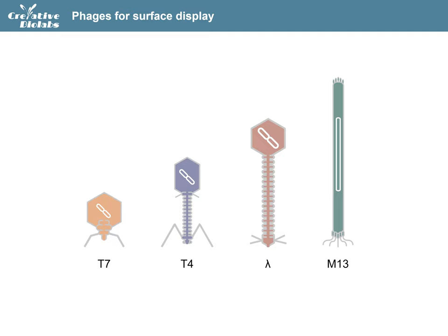In phage display, the foreign DNA fragment encoding polypeptide is fused with the coding gene of phage surface protein. The resulting fusion polypeptide will be displayed on the surface of phage and maintain the relative spatial structure and biological activity. Phage display systems mainly use filamentous, T4, T7, and lambda phage, while M13 filamentous phage is the most commonly used.